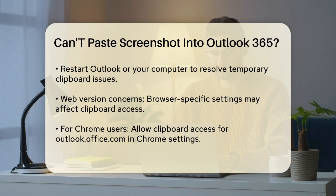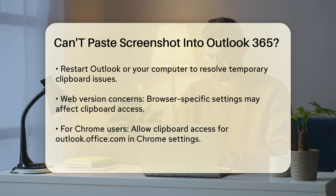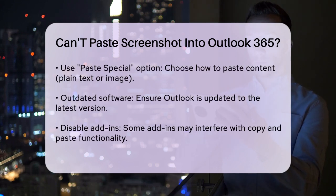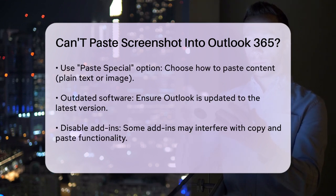If you're using the web version of Outlook, there might be browser-specific settings causing the problem. For example, in Google Chrome, you need to allow clipboard access for Outlook. To do this, go to the Chrome settings, navigate to the Privacy and Security tab, then to Site Settings, and finally allow clipboard access for Outlook.office.com. After making these changes, close and reopen Chrome to see if it resolves the issue.